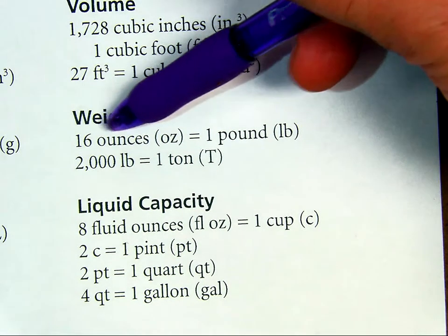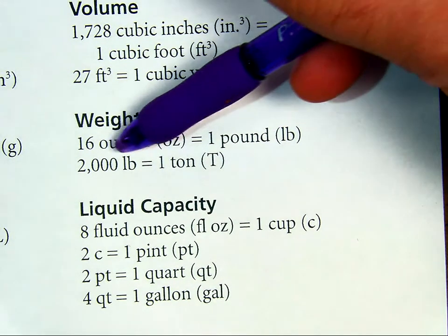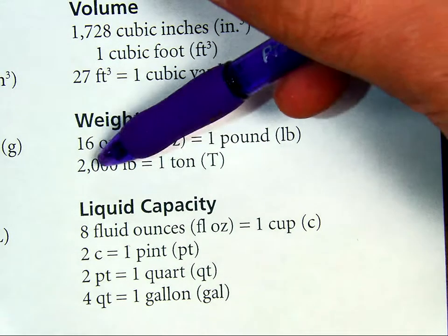There are 16 ounces, weight ounces, in 1 pound. There are 2,000 pounds in a ton. So there are 16 in 1, 2,000 in 1.